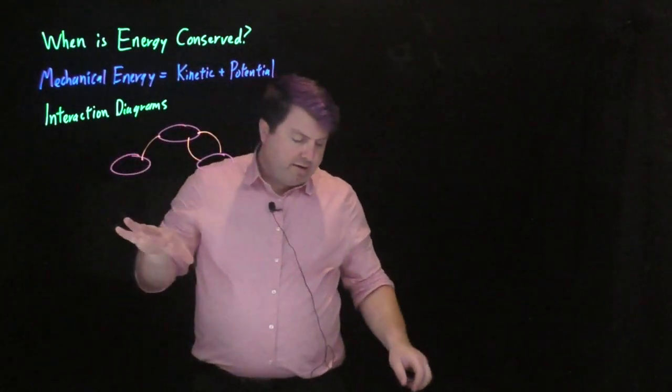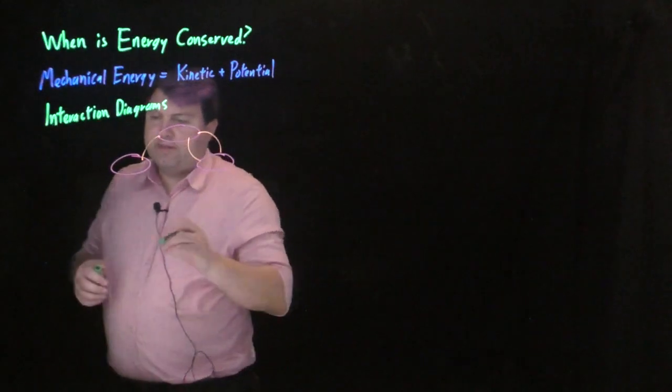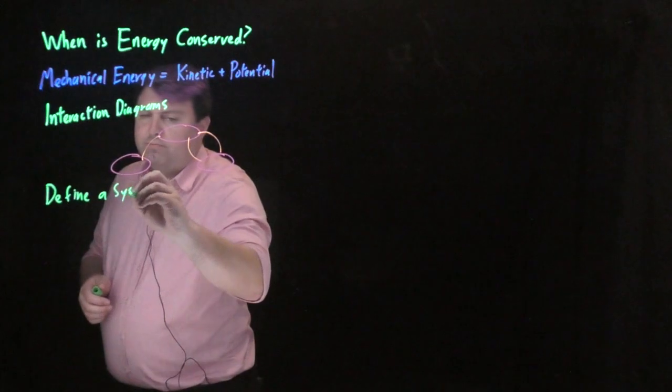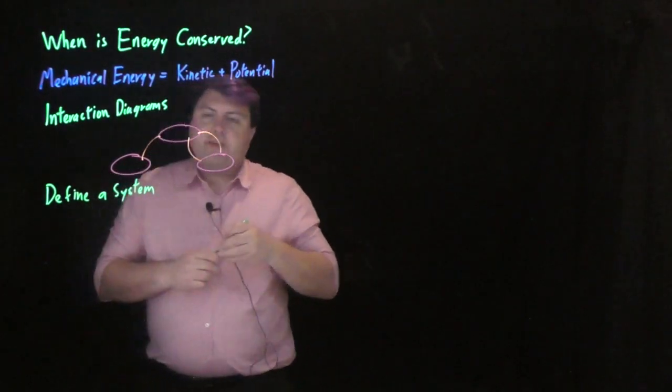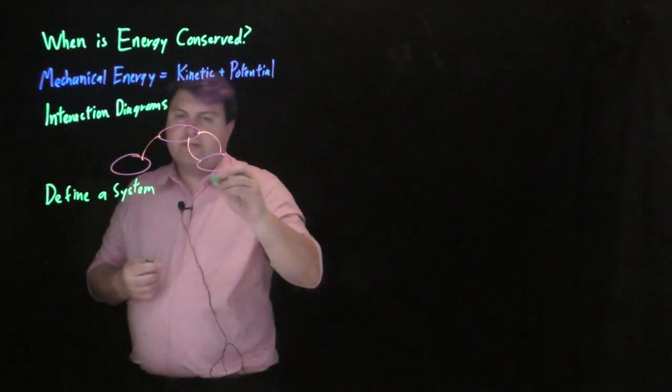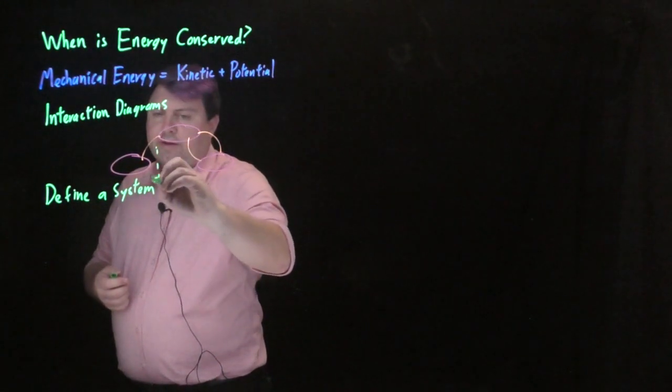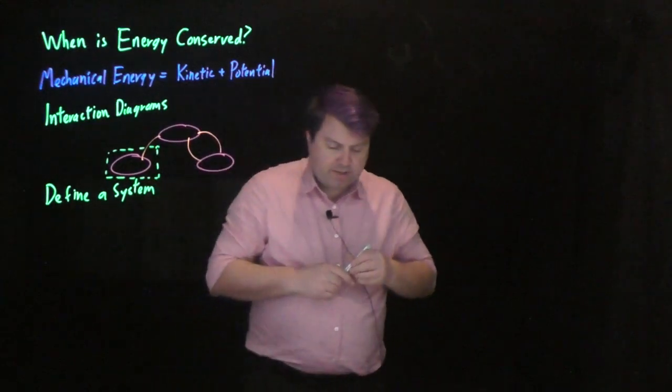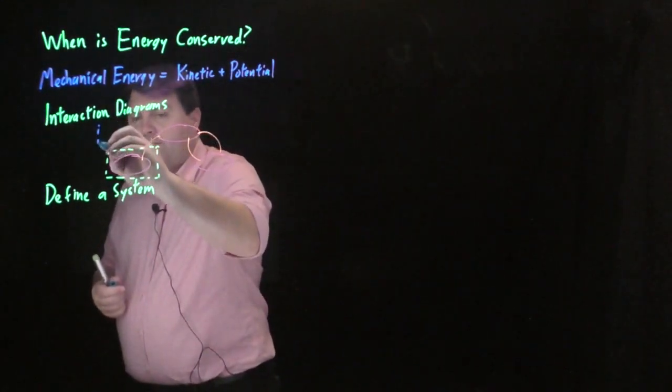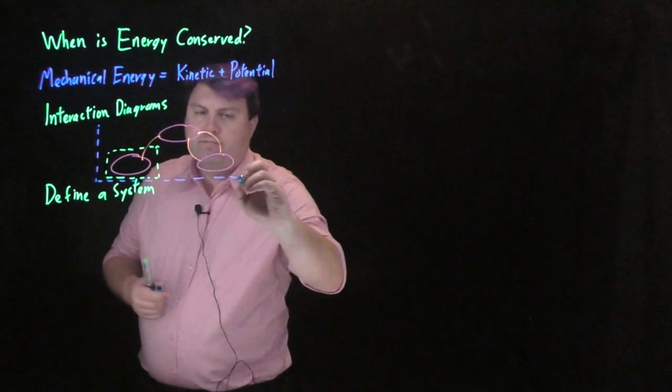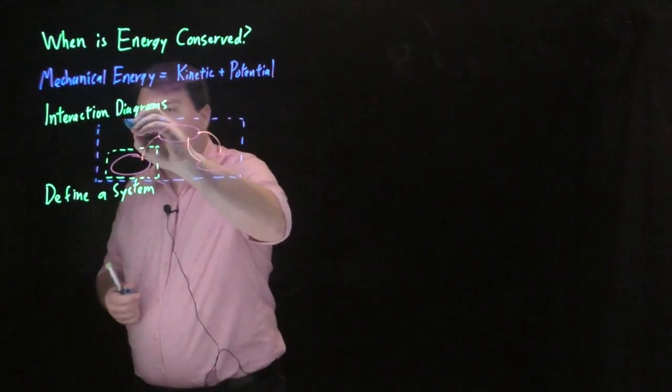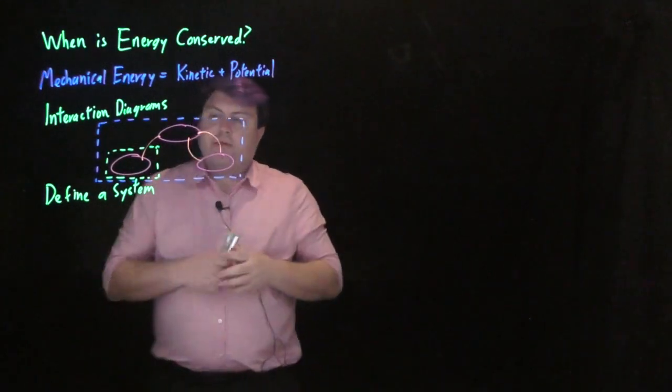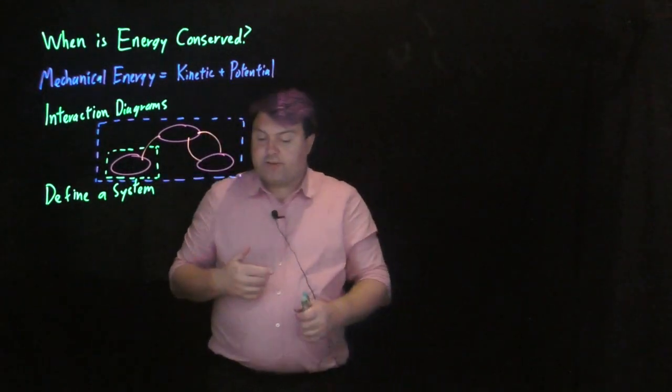In our interaction diagrams, then we have to define a system. And so here are two potential systems that we could define. We could define a system that is maybe just this one object, or we could define a system that is maybe all three objects. Both of these are choices. And which choices we choose will determine whether or not we conserve energy every single time.